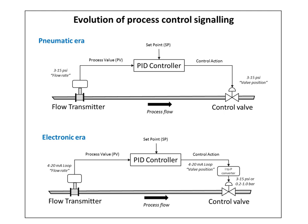Process control of large industrial plants has evolved through many stages. Initially, control would be from panels local to the process plant. However, this required a large manpower resource to attend to these dispersed panels, and there was no overall view of the process. The next logical development was the transmission of all plant measurements to a permanently manned central control room. Effectively this was the centralization of all the localized panels, with the advantages of lower manning levels and easier overview of the process. Often the controllers were behind the control room panels, and all automatic and manual control outputs were transmitted back to plant.